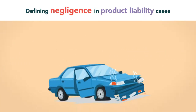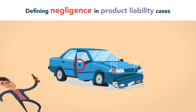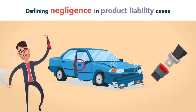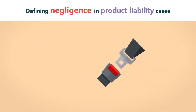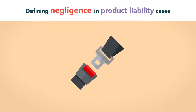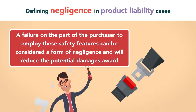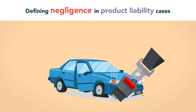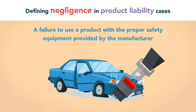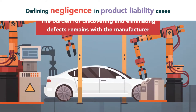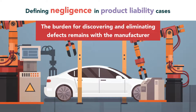For example, in one case a plaintiff was thrown from his car due to a defect in the door latch but was also intoxicated and had failed to use the seatbelt or lock the car door. Certain types of plaintiff negligence are particularly pertinent for products liability cases. For example, many commercial products are manufactured with specially designed safety features that protect the user. A failure on the part of the purchaser to employ these safety features can be considered a form of negligence and will reduce the potential damages award. The decision not to use a seatbelt while in a moving car is one example of a failure to use a product with the proper safety equipment provided by the manufacturer.